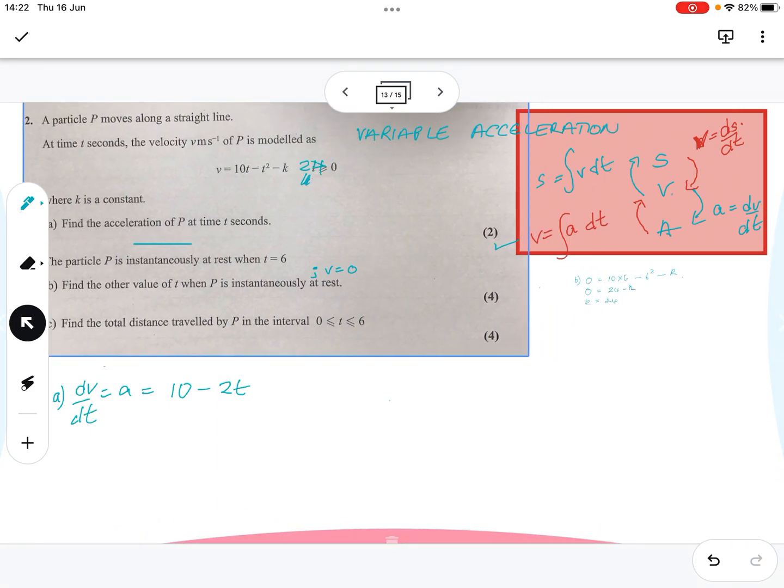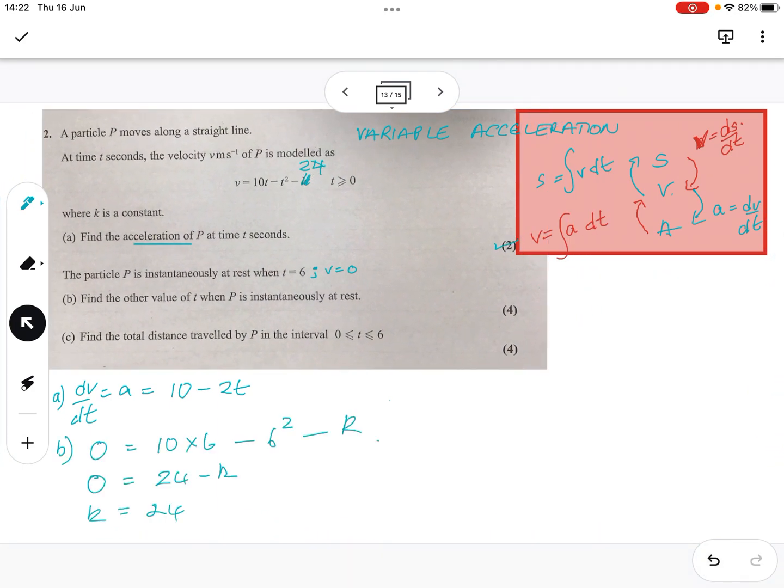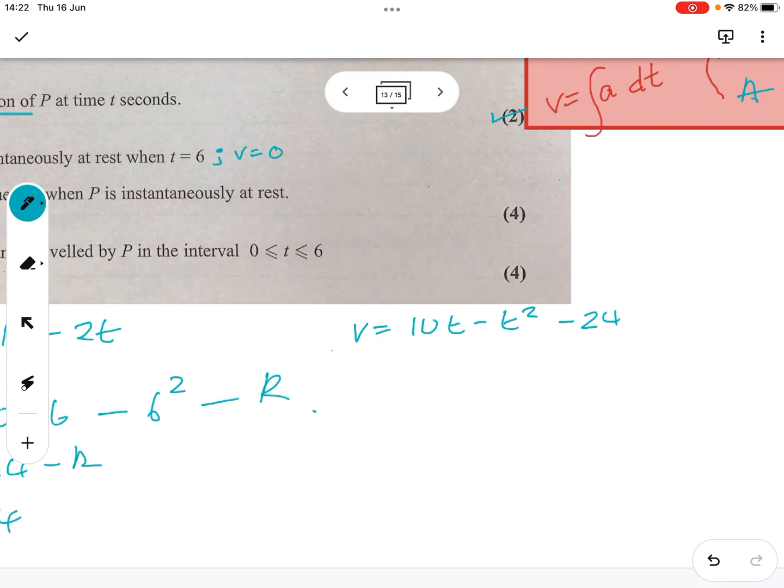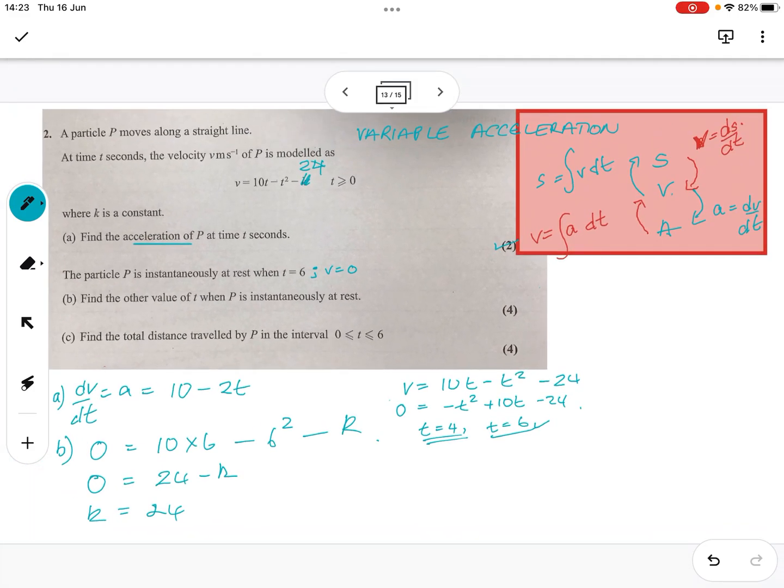Right. So, having got that, find the other value of t. So, let's look at that equation. Let's come back again. So, we've got v equals 10t minus t squared minus 24. Find the value of t. So, when the other value, so when v is 0, so 0 equals minus t squared plus 10t minus 24. And all I'm going to do is stick that in my calculator, because I don't think they care whether we differentiate that one or solve that one out. So, I've got t equals 4 and t equals 6. We knew that one, so this is the answer that we're looking for. So, t is 4. Brilliant.